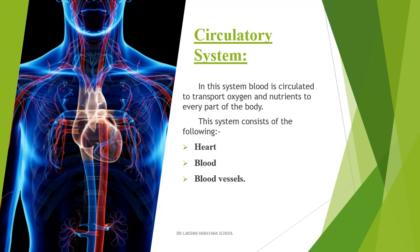Let's move on to the next system, the circulatory system. In the circulatory system, blood is circulated to transport oxygen and nutrients to every part of our body. The circulatory system consists of the following: heart, blood, and blood vessels.